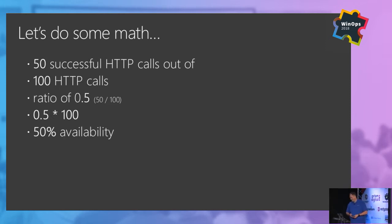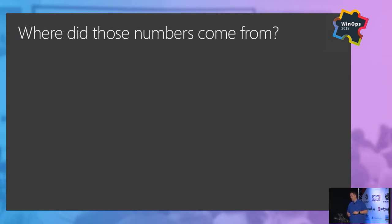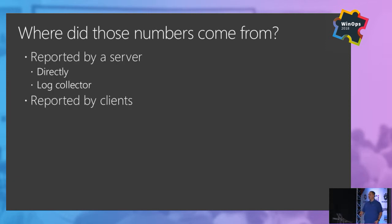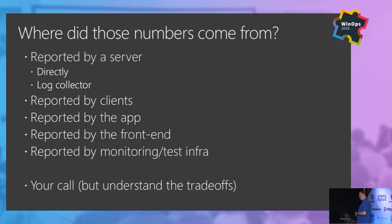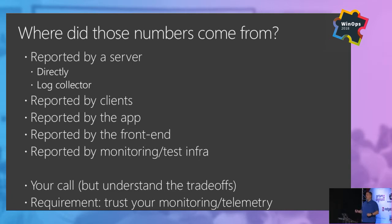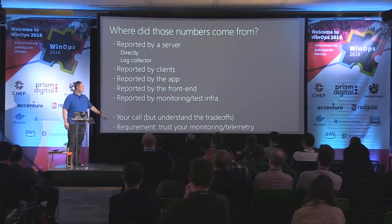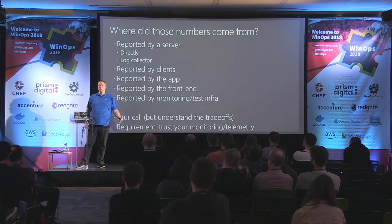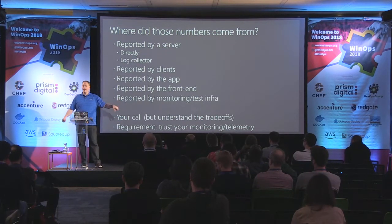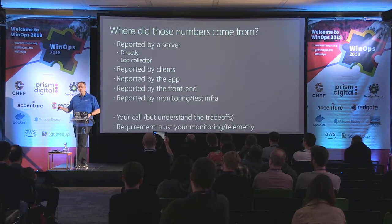Where did those numbers come from? This is that discussion I was just talking about. There are a lot of places that we can potentially get these types of numbers from, and each place that we get them from is going to have different trade-offs. All of them, though, require me to trust that data. If that data is coming in and is inaccurate, and I have to make a mental decision about which data I trust, I've now pretty much undermined all of the potential conclusions I can draw from these metrics.